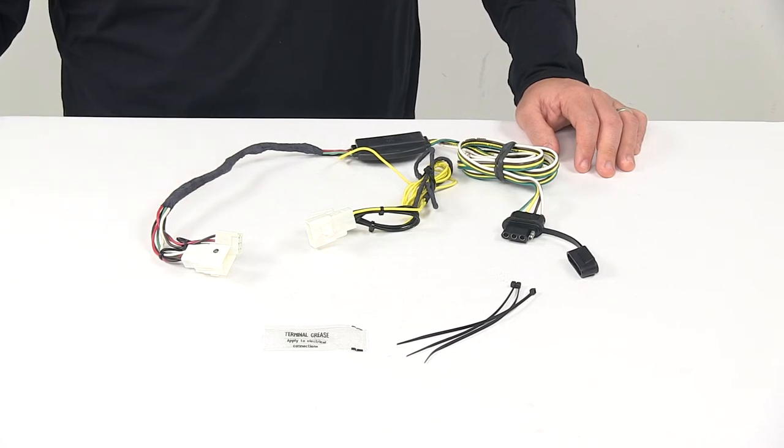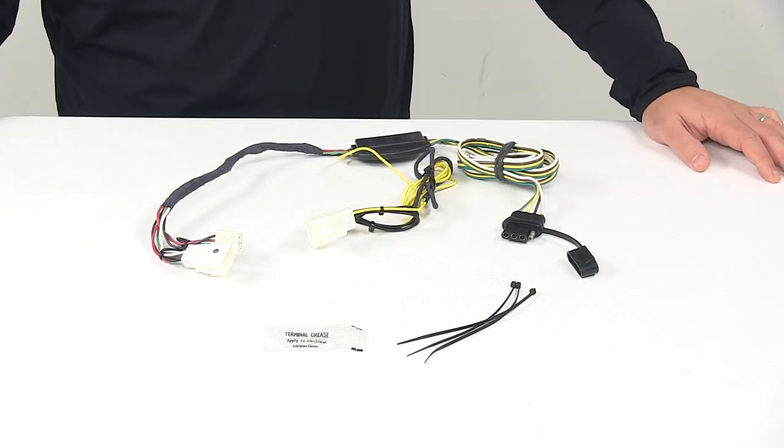That's going to do it for today's look at the Hopkins Plug-In Simple Vehicle Wiring Harness with the four-pole flat trailer connector. This product fits certain years of the Toyota RAV4.